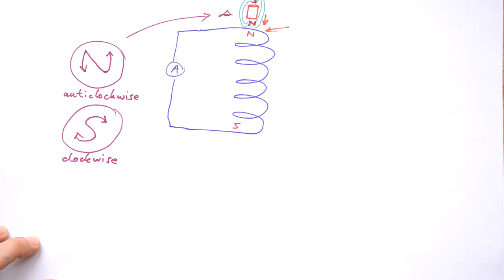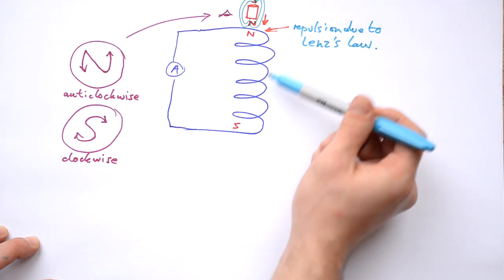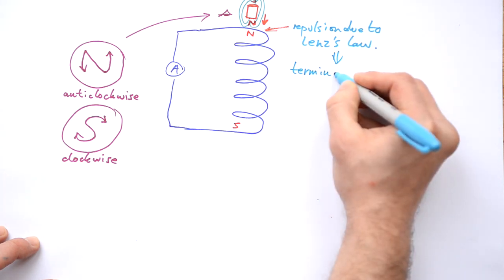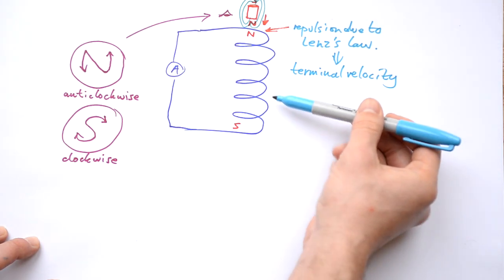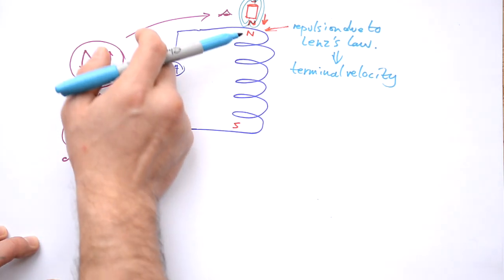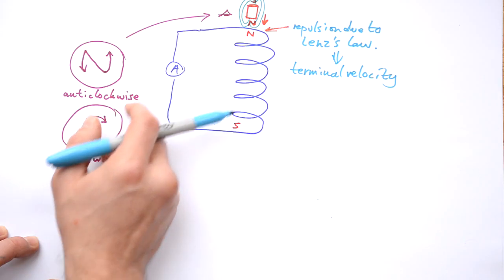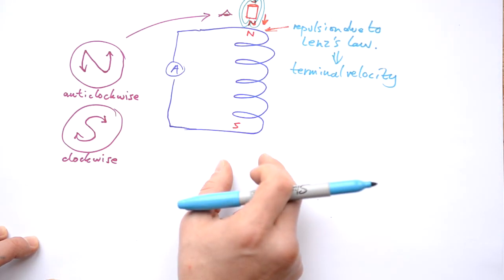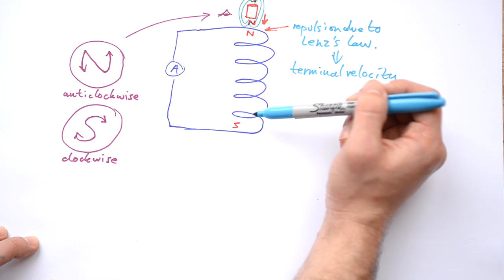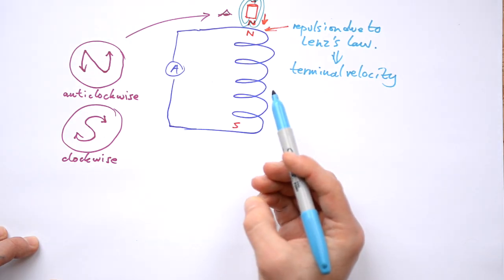So if we have a north pole induced at the top, that means we have repulsion — and that's due to Lenz's law. The solenoid doesn't want the magnet to enter, so it tries to stop it. The magnet reaches terminal velocity, because the induced force is equal and opposite to the magnet's weight. This works for a solenoid, and also for just a conducting pipe, which you can think of as an infinite number of little loops. Energy is ultimately lost as heat due to the resistance of the wire.